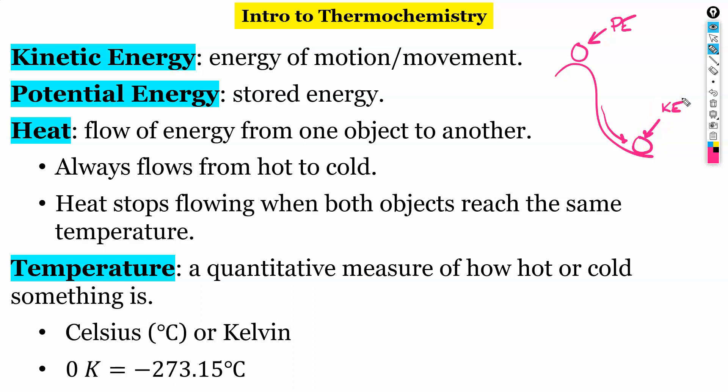So we're going to be still looking at kinetic and potential energy in thermochemistry. It's going to be a little different but kind of the same idea. Heat is the flow of energy from one object to another and we always go hot to cold. Heat stops flowing when both objects reach the same temperature.